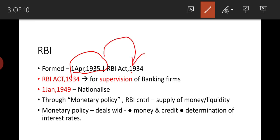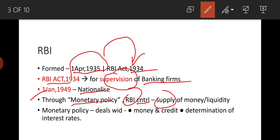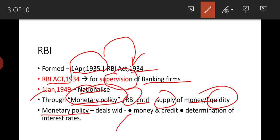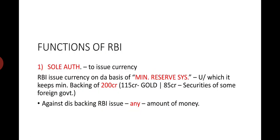The RBI Act 1934 was for the supervision of banking firms. RBI was nationalized on 1st January 1949. Through its monetary policy, RBI controls the supply of money and liquidity. Monetary policy deals with money and credit — that is, loans given by banks — and the determination of interest rates charged by banks.